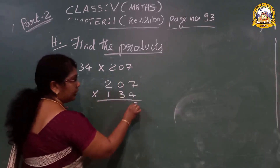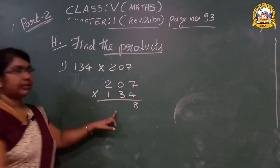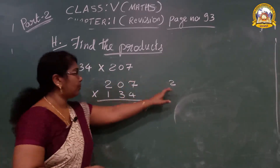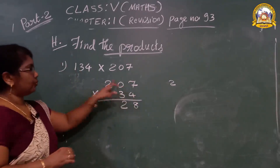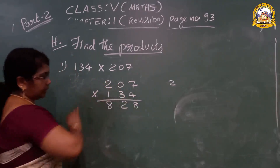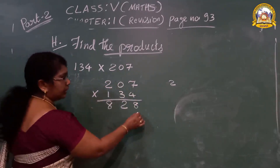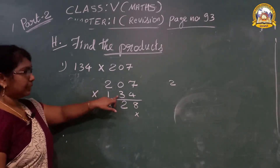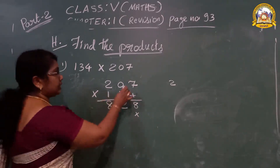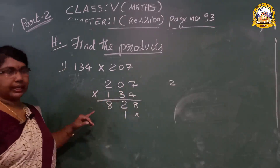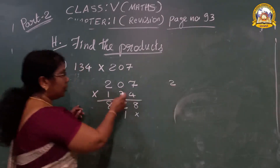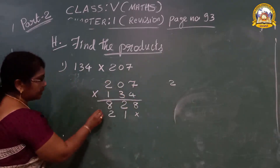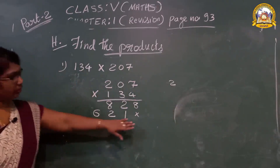Starting with 4 × 7 = 28, carry 2. 4 × 0 = 0, plus 2 = 2. 4 × 2 = 8. Then for the next row, remember you have to put a zero here, then multiply with the next digit 3. 3 × 7 = 21, carry 2. 3 × 0 = 0, plus 2 = 2. 3 × 2 = 6. See how the teacher has written here.